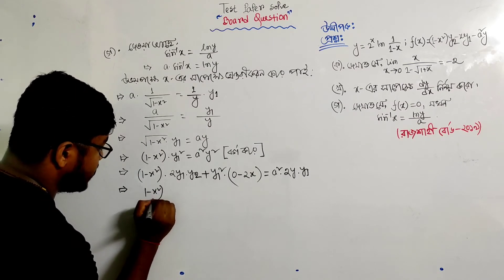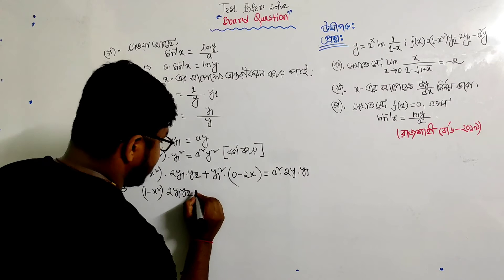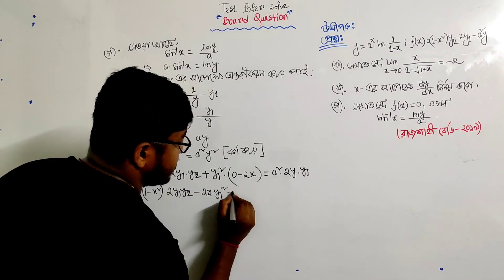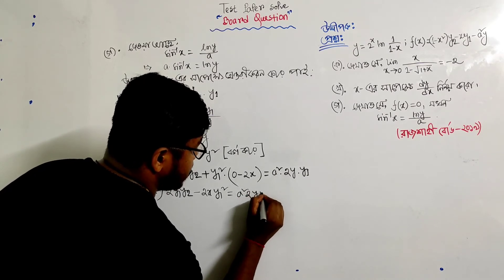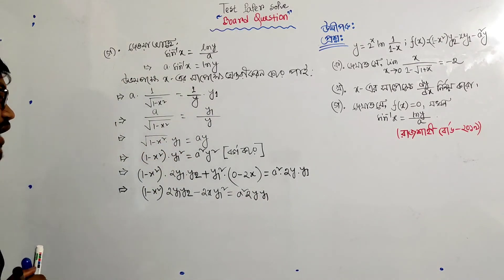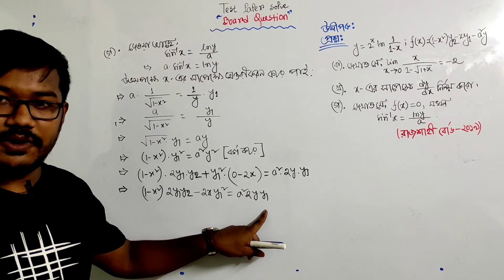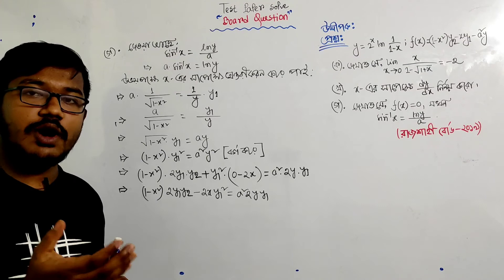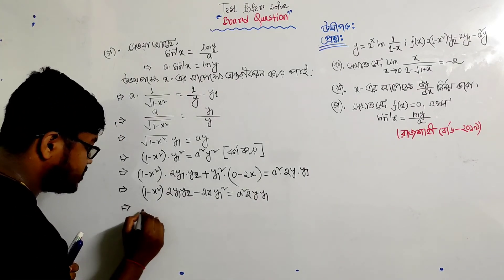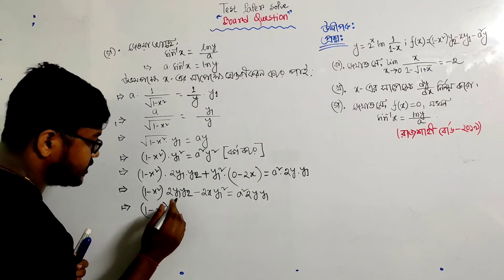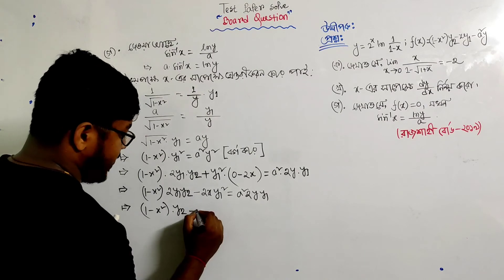So we have: 1 minus x squared times y₂, then minus 2x times y₁ squared. This equals a squared times 2y₁. So 2y₁ on both sides: 1 minus x squared times y₂ converts, minus 2xy₁ plus some terms.